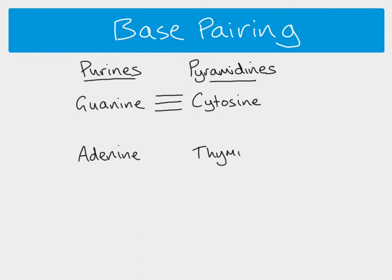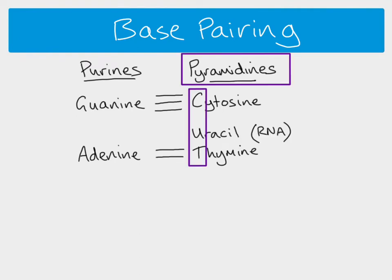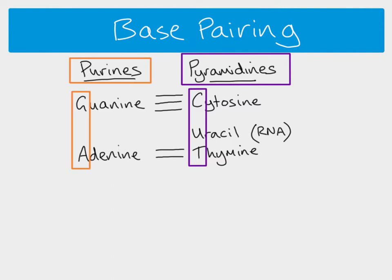One way to remember which are purines and which are pyrimidines is by drawing cytosine, uracil, and thymine — which gives you the word CUT. CUT is a longer word, and pyrimidine is a longer word than purine. GAR — a short word — matches purine, which is also a short word. That's one way to remember which are purines and which are pyrimidines.